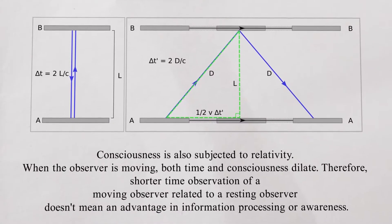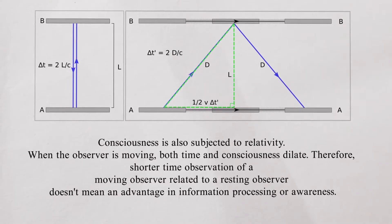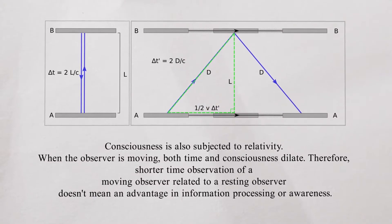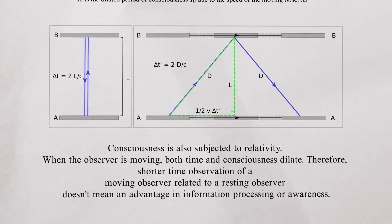Consequently, Einstein's assumption that the speed of light is constant in all frames of reference regardless of their motion is a sensory as well as mental experience. Moreover, the frequency of consciousness relates to the state of awareness such that higher frequency means higher awareness and lower frequency means lower awareness.